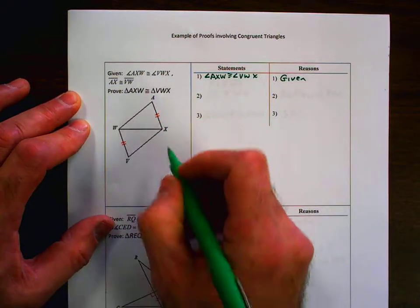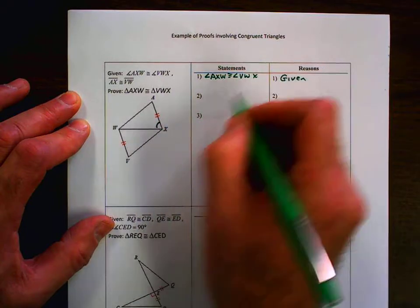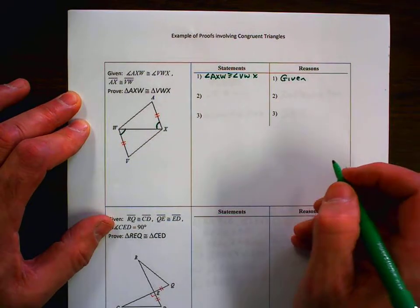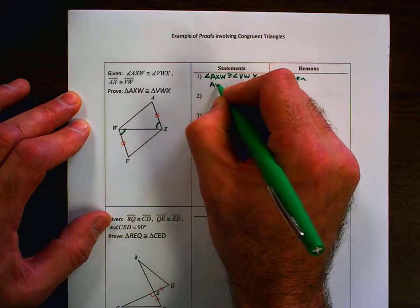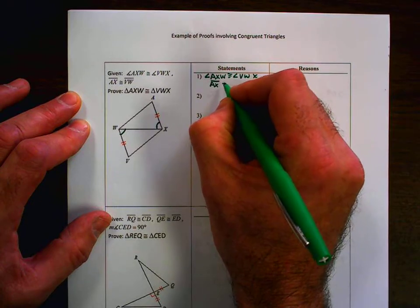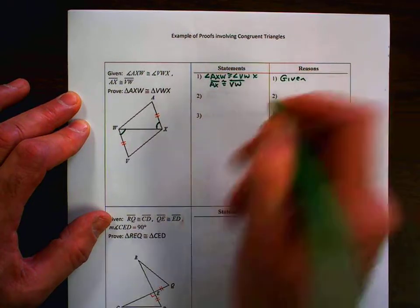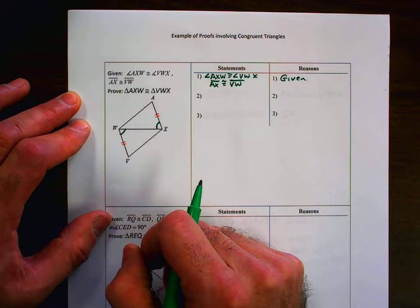And that is not marked here, so we have to make sure we mark that AXW and VWX. And those are going to be congruent. They also told us that AXW was congruent to VW, and in that case, that already was marked. So we need to mark that, it has been done for us.